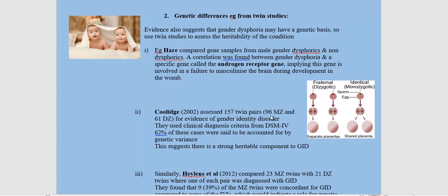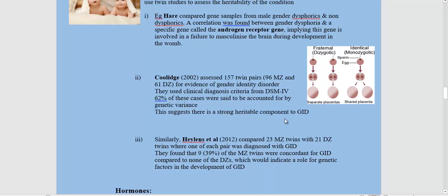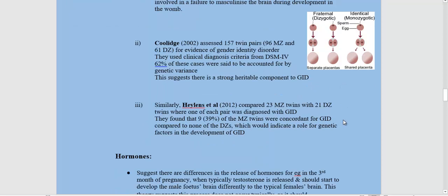Coolidge assessed 157 twin pairs — 96 MZ and 61 DZ — for evidence of gender identity disorder using clinical diagnosis from DSM-4. 62% of these cases were said to be accounted for by genetic variance, suggesting a strong heritable component to GID. Hallen compared 23 MZ twins with 21 DZ, where one of each pair was diagnosed with GID. Nine of the MZ twins were concordant for GID compared to none of the DZ, again indicating a role for genetic factors.